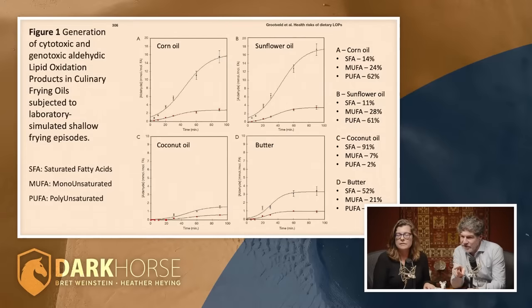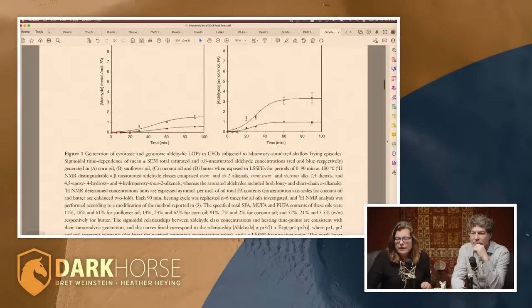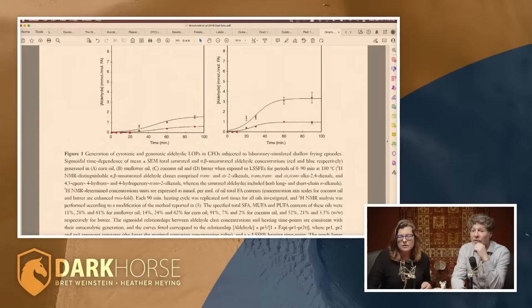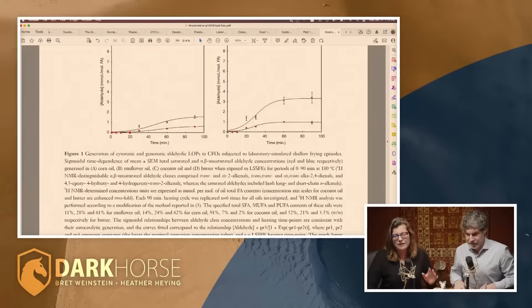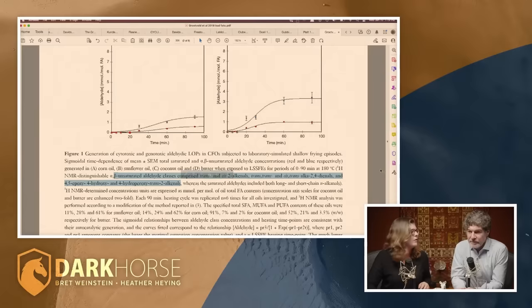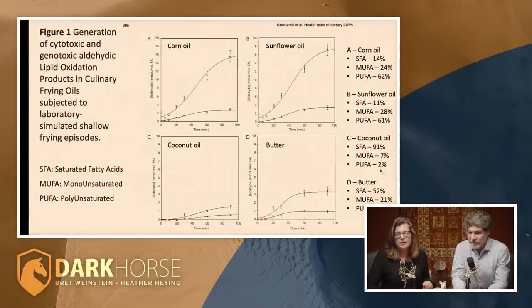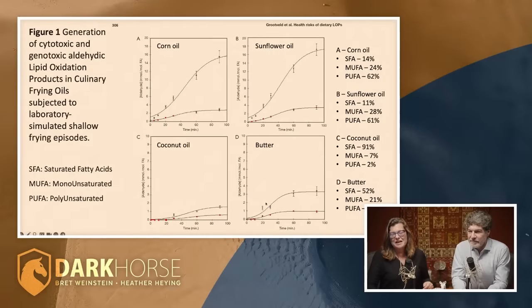Can you describe what the two different lines on the graph are? It's the sigmoidal time dependence of mean plus or minus SEM total saturated and alpha-beta unsaturated aldehyde concentrations, red and blue respectively. So it's just two different classes of aldehydes. There are a lot of compounds within each class, and I didn't go into the chemistry of exactly what the differences are and why they divide neatly into two classes.